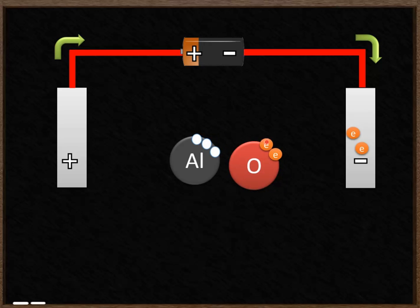Oxygen has two extra electrons that it wants to get rid of. Aluminium needs three electrons. This has a negative charge. This has a positive charge because it's got three spaces. So what's going to happen is this negatively charged oxygen with extra electrons, because it's negative, will be attracted to the positive side of the circuit.